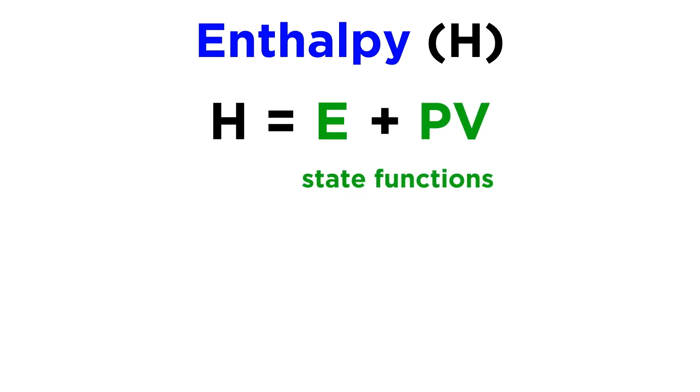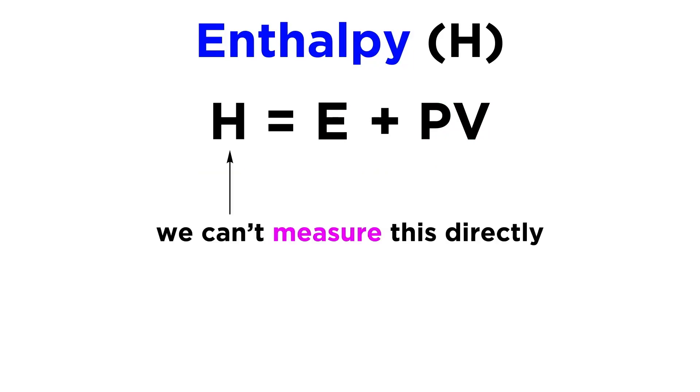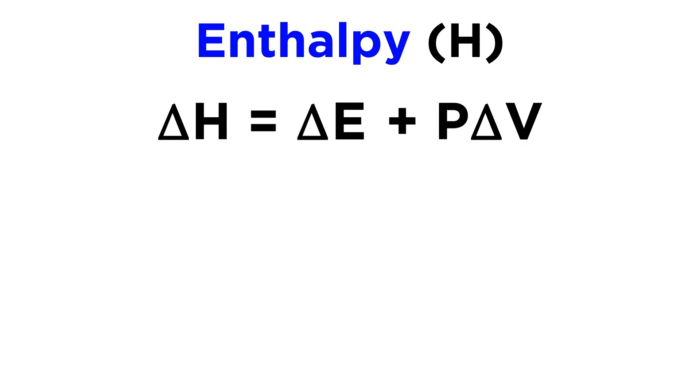Internal energy, pressure, and volume are all state functions, so enthalpy will also be a state function. Enthalpy values can't be measured directly, we can only measure enthalpy changes for a particular process, so we can rewrite this more practically as delta H equals delta E plus P delta V, where the uppercase delta means change in.